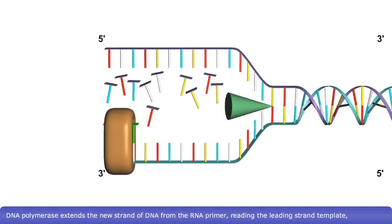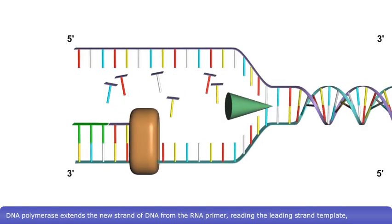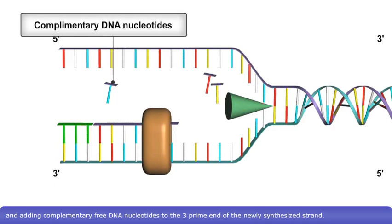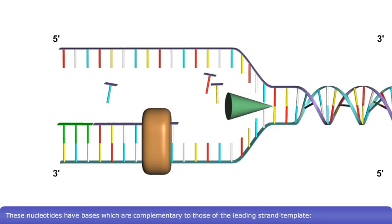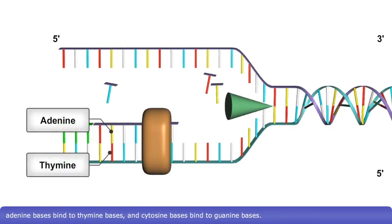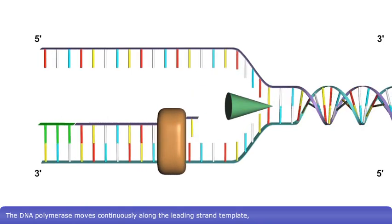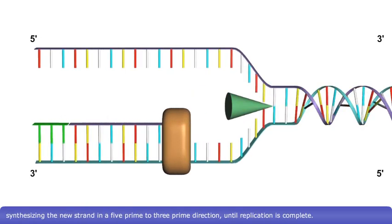DNA polymerase extends the new strand of DNA from the RNA primer, reading the leading strand template and adding complementary free DNA nucleotides to the 3' end of the newly synthesized strand. These nucleotides have bases which are complementary to those of the leading strand template: adenine bases bind to thymine bases, and cytosine bases bind to guanine bases. The DNA polymerase moves continuously along the leading strand template, synthesizing the new strand in a 5' to 3' direction until replication is complete.